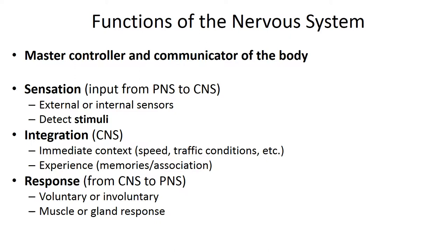The functions of the nervous system include using sensory receptors to monitor changes both inside and outside of the body — that's the input. Nervous system tissue processes and interprets sensory input — that's integration. Then it effects a response appropriate to the stimulus, which is the motor output. This allows for homeostasis to be maintained.